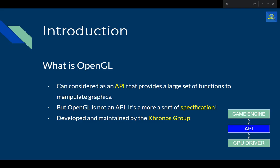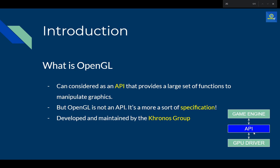What is OpenGL? OpenGL can be considered as an API that provides a lot of functions to work with graphics. I say 'can be considered' because it's not strictly an API. Think of it this way: we have a game engine on top and a graphics card below, and we need something that defines how the engine communicates with the graphics card to render things on screen — that's basically what OpenGL does.